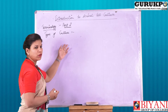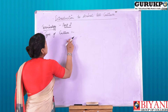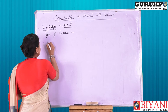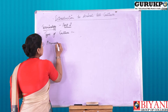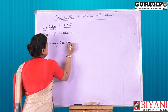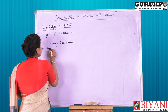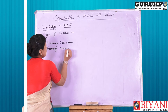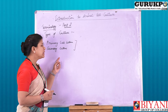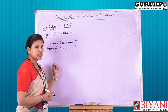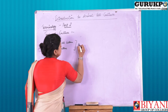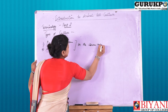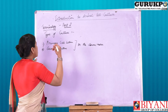We have discussed about the types of cultures, which included first the primary cell culture and second the secondary cell culture. We have discussed about both of these, and this categorization of culture was based on the source taken.